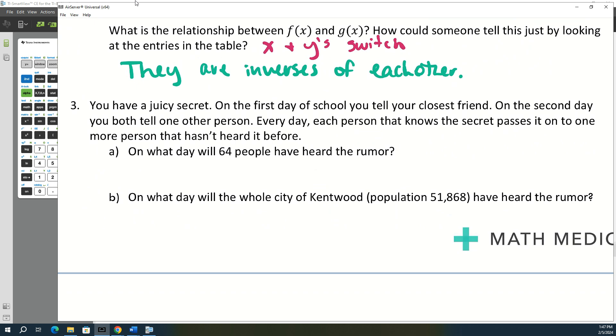So on day one, how many people know the rumor? Two. What about day two? Four. Yeah. So each one of those people tell. Day three? Eight. So we need to keep doing this. This is, we wouldn't have to do this very long, just doubling each time. So we can see that on day six, 64 people know the rumor.